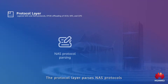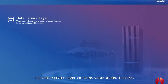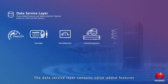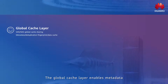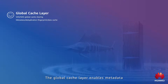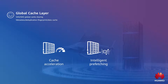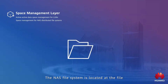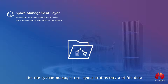The protocol layer passes NAS protocols and implements permission management. The data service layer contains value-added features such as disaster recovery and backup. The global cache layer enables metadata and data cache acceleration and intelligent prefetching for both file and block services. The NAS file system is located at the file and block space management layer, which manages the layout of the directory and file data.